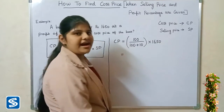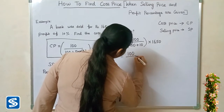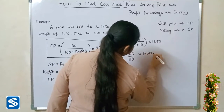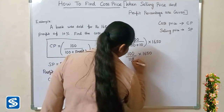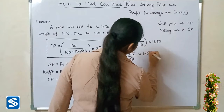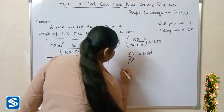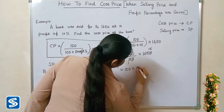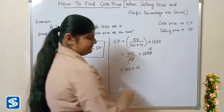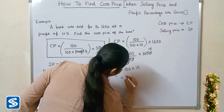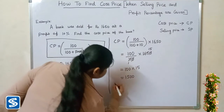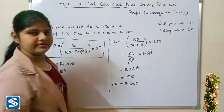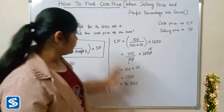100 plus 10 equals 110, so we have 100 divided by 110, multiplied by 1650. This gives us cost price equal to rupees 1500. Therefore, the cost price of the book is rupees 1500.